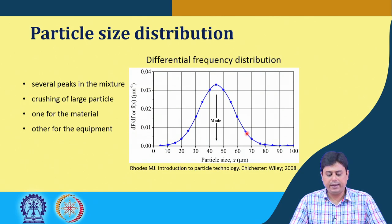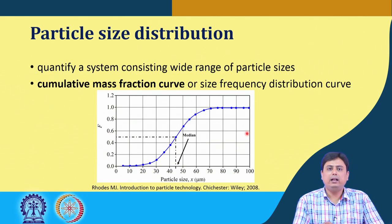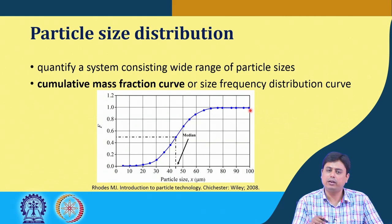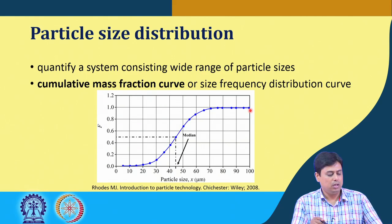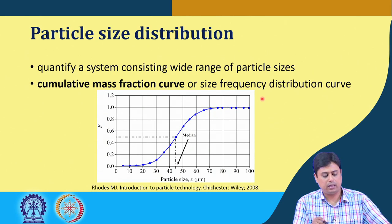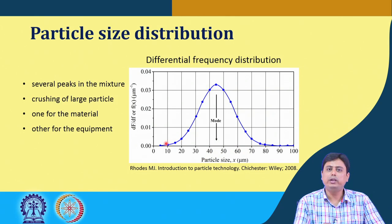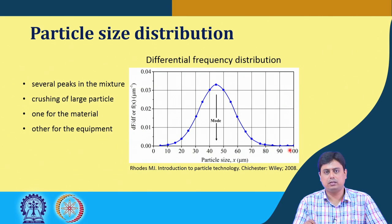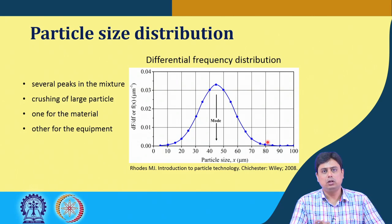To summarize: the cumulative mass fraction curve is for a particular given size range. When we take the slope at each and every point of this curve and plot it against particle size, we get the distribution. The differential — or derivative — of the cumulative mass fraction curve is this differential size frequency distribution curve. This is the relation between the two graphs.